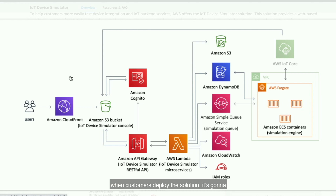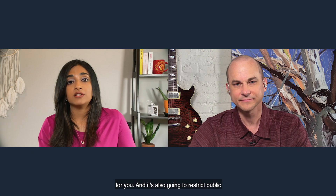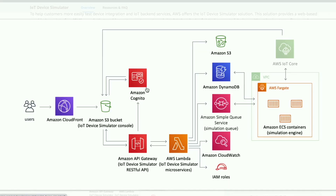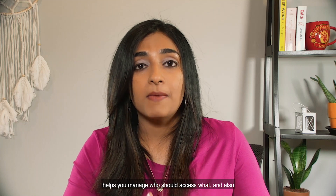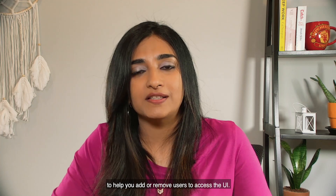When customers deploy the solution, it's going to set up your IoT Device Simulator UI. This is a static website hosted on an Amazon S3 bucket. There's also going to be an Amazon CloudFront, which provides the CDN network for you, and it's also going to restrict public access to the contents of your S3 bucket. Amazon Cognito User Pools basically helps you manage user access to the UI, and helps you manage who should access what, as well as add or remove users.